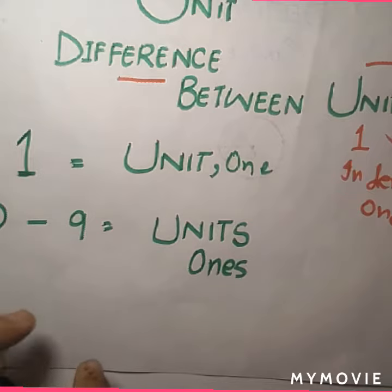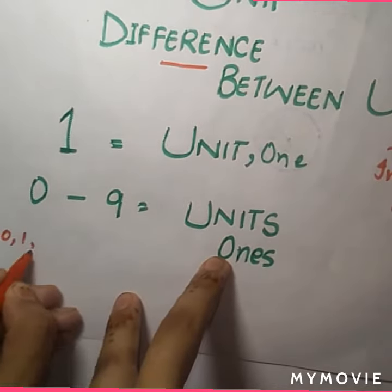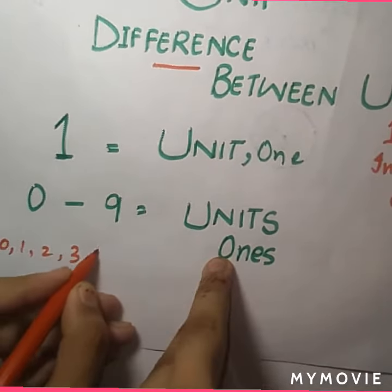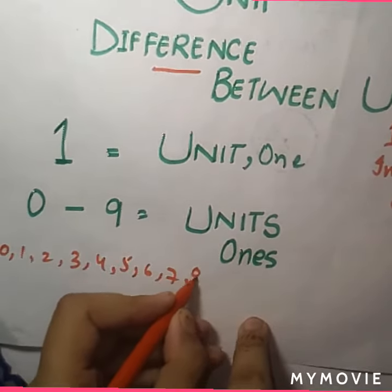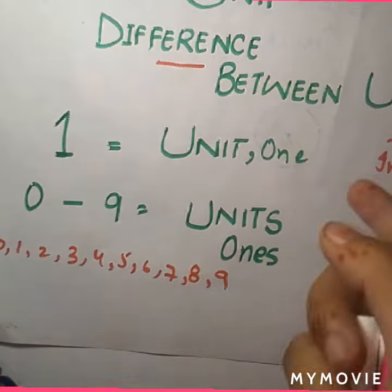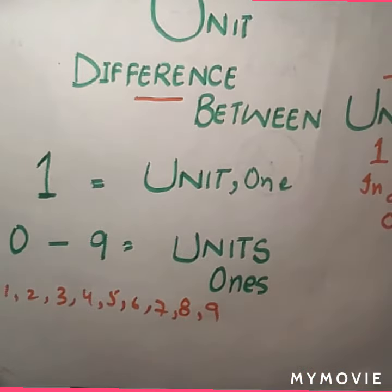One is equal to unit. Zero to nine, and values between zero to nine are considered as units. One, two, three, four, five, six, seven, eight, and nine are considered as units of ones.